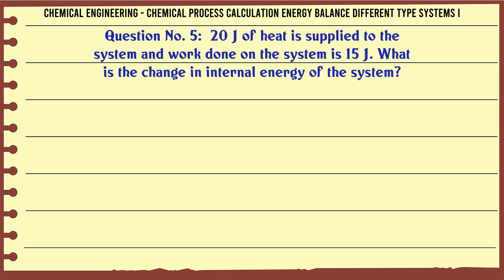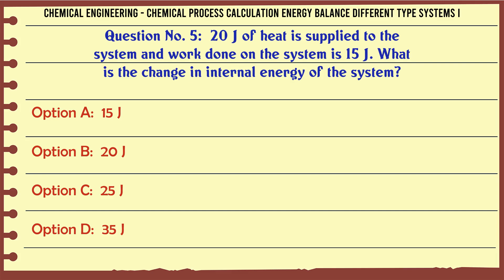20J of heat is supplied to the system and work done on the system is 15J. What is the change in internal energy of the system?